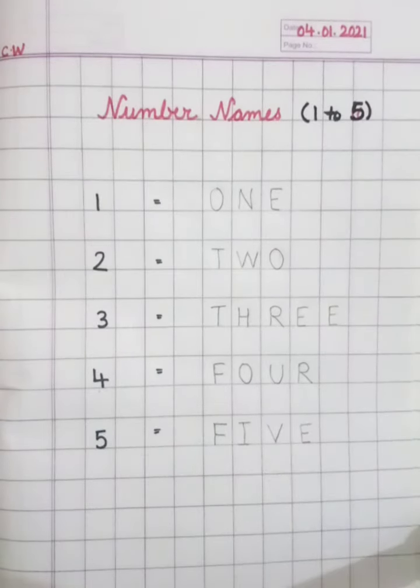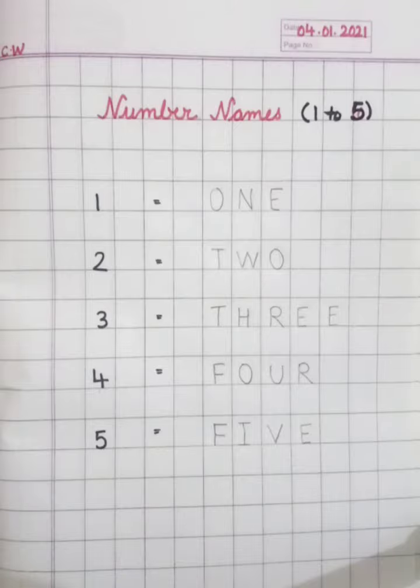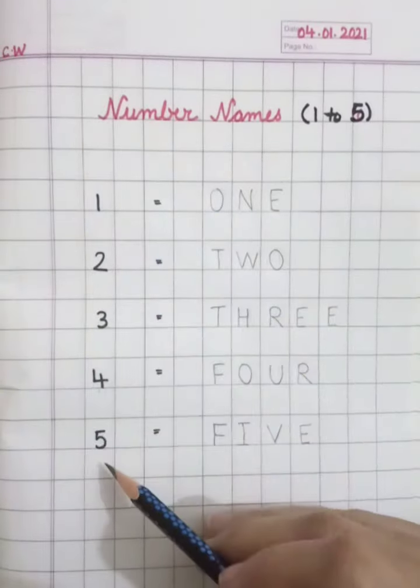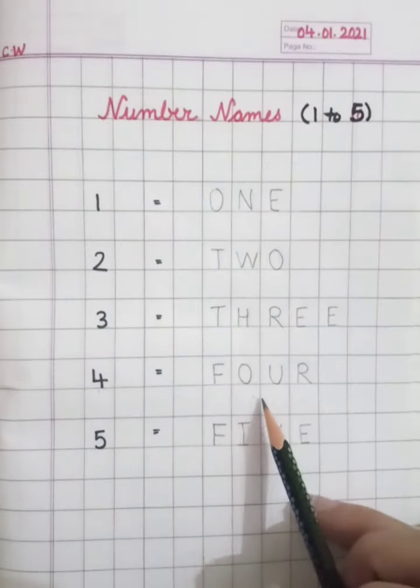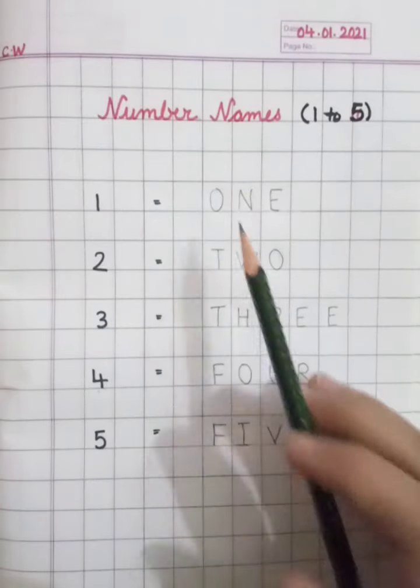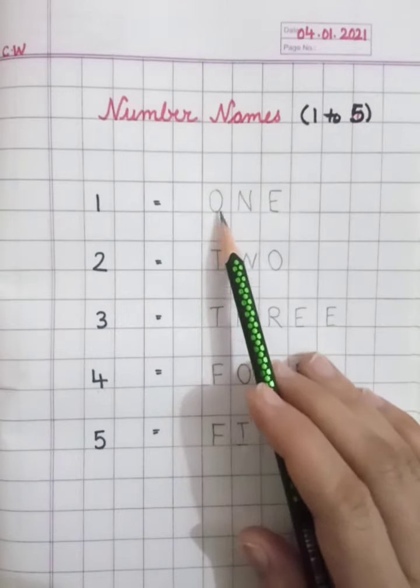Okay, student. In your math notebook, you have to write like this. First, you have to write numbers. And then after you have to write spellings. In one box, one letter like this.